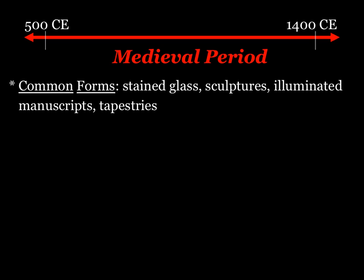As we move towards art in the medieval period — basically art from the fall of the Western Roman Empire, about 500 CE, all the way to the start of the Renaissance, about 1400 CE — we find that common forms of art have changed just a little bit in terms of what we see produced.